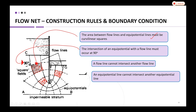You cannot have a rectangular shape — it must be a curvilinear square. Also, the intersections of equipotential lines with flow lines must occur at 90 degrees. As you can see here, this is the flow line and this is the equipotential line, and they meet at 90 degrees.